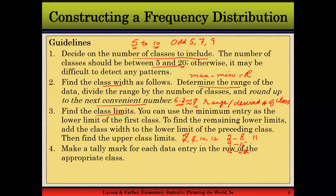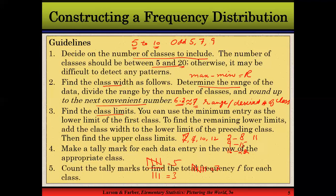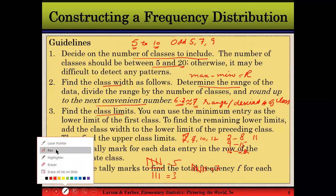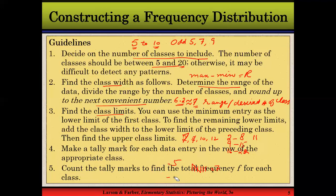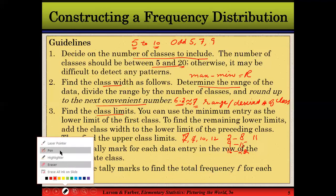Step four: make a tally mark for each data entry in the row of the appropriate class. There are four vertical marks and then a diagonal mark to show a set of five. For example, a tally showing five marks means five values in that class; three marks means three values; seven marks means seven values. Count the tally marks to find the total frequency for each class.